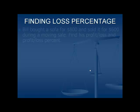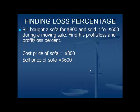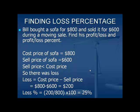Finding loss percentage. Bill bought a sofa for $800 and sold it for $600 during a moving sale. Find the profit or loss and the percent profit or loss. The cost price of the sofa is $800 and the selling price is $600. The selling price is less than the cost price, so there is a loss. The loss is calculated by subtracting the selling price from the cost price: $800 minus $600 equals $200. So the loss percentage is equal to 200 divided by 800, multiplied by 100, that is equal to 25%.